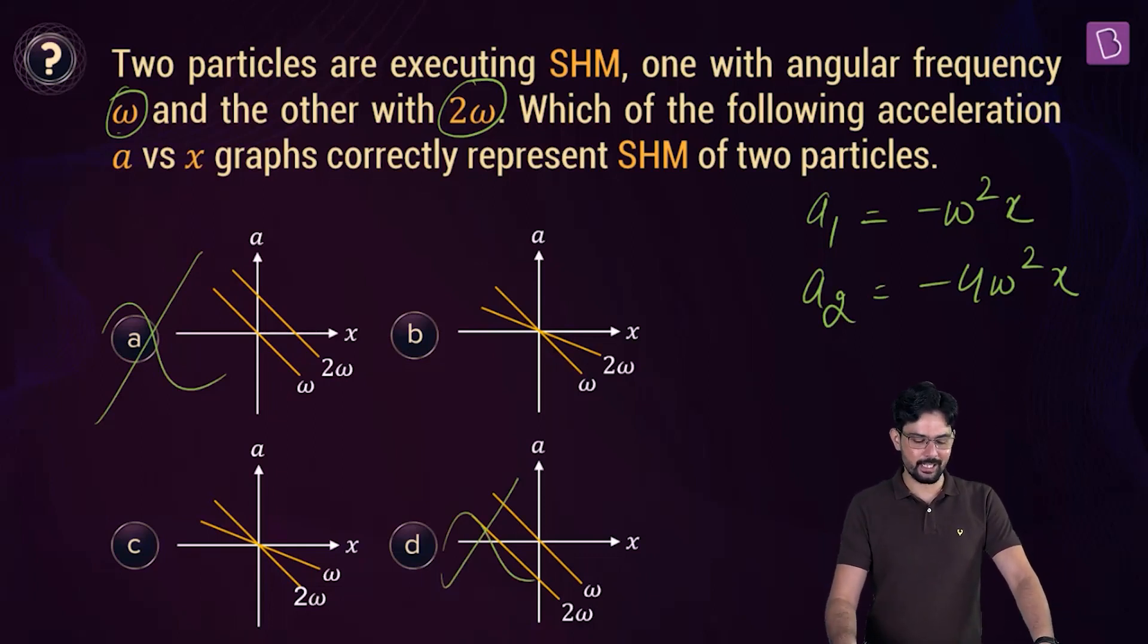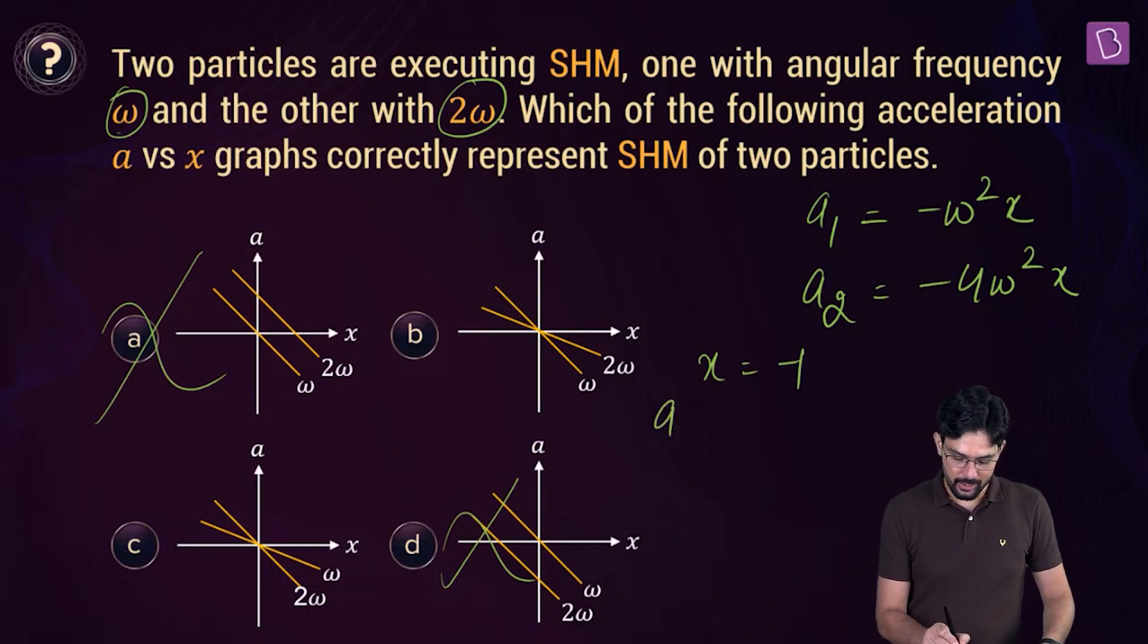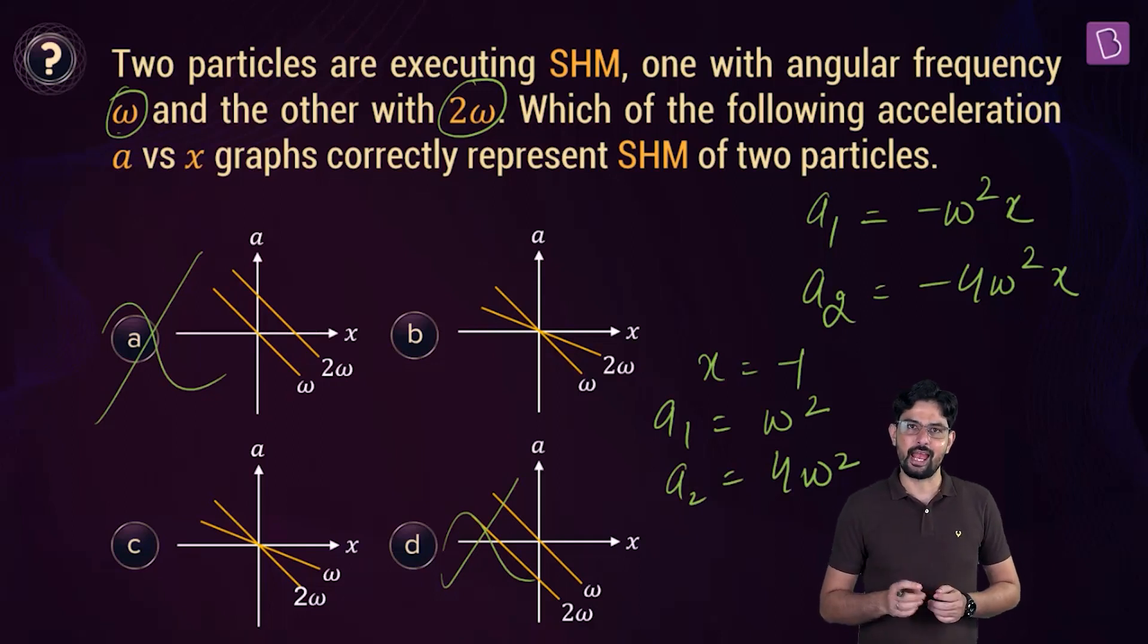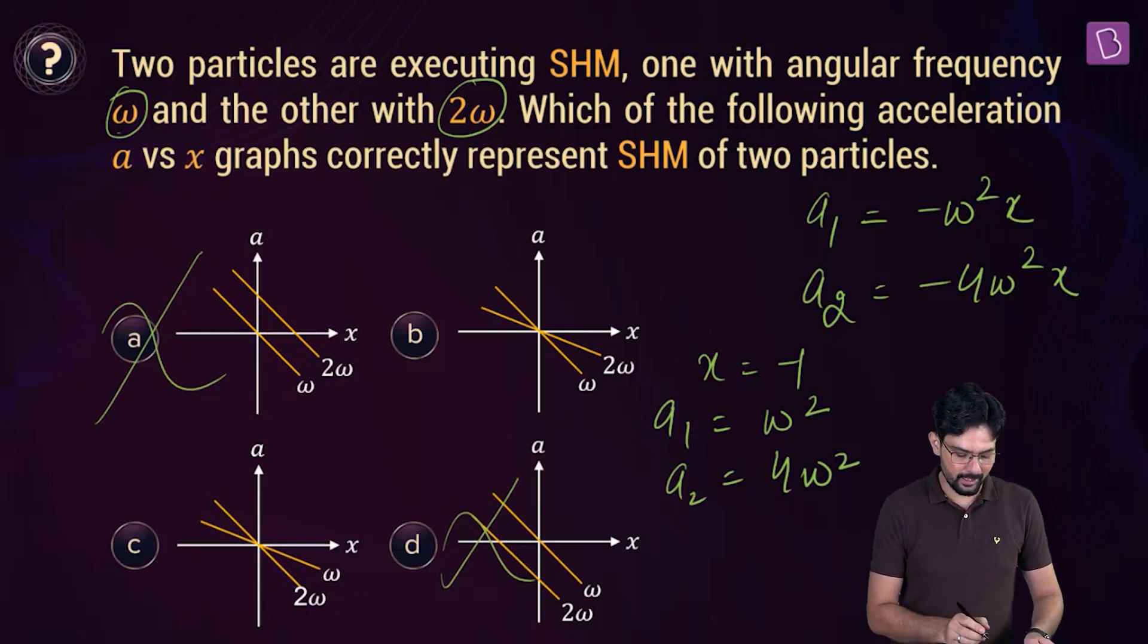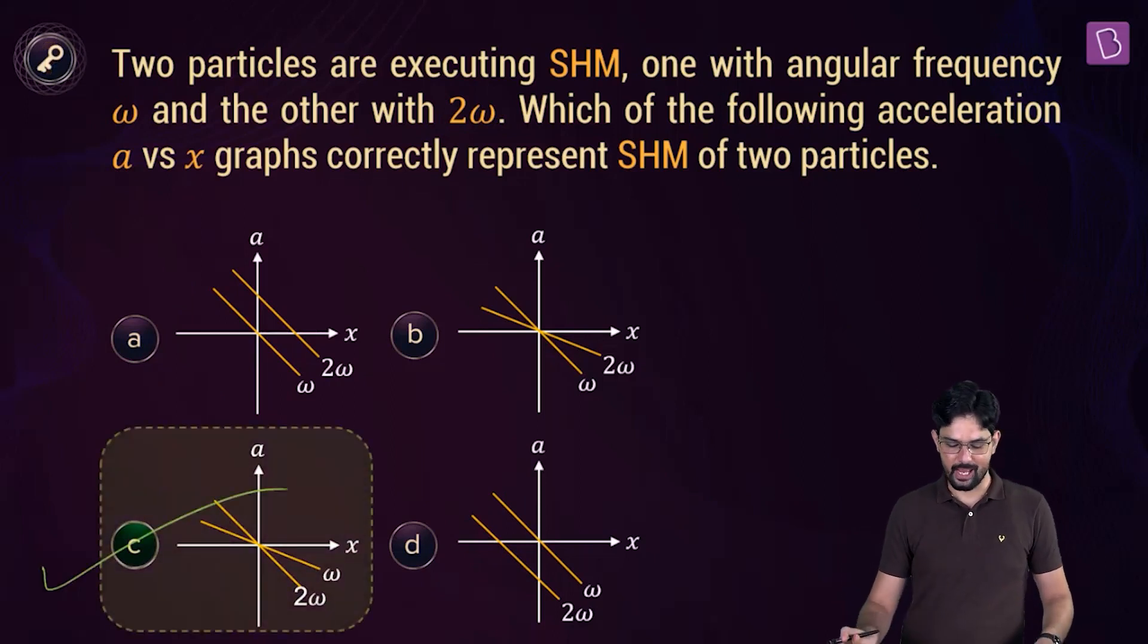So out of options B and C, one is going to be right. And which one is going to be the right graph for that? Let's put some negative value of X. Let's say X is equal to minus 1. For X is equal to minus 1, A1 is going to be omega square, whereas A2 will be 4 omega square. So clearly A2 is greater than A1 and that is correctly represented by the graph given in option C. So you can see that for any negative value of X, A2 is greater than A1. So from here, you can tick option C as the right option.